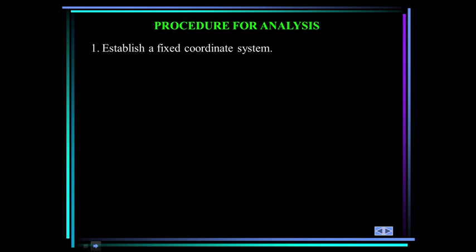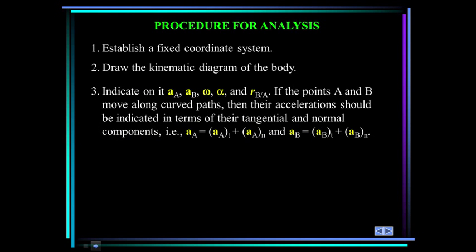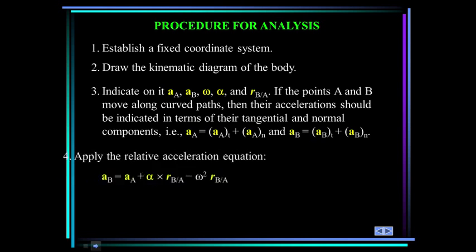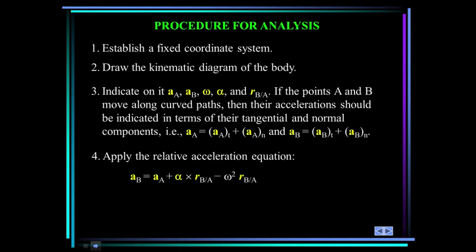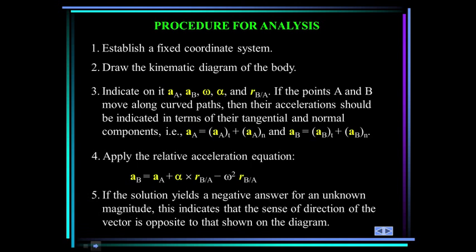Let's establish a procedure for analysis. First, establish a fixed coordinate system. Draw the kinetic diagram of the body, and indicate on it the acceleration of A, acceleration of B, omega, alpha, and R of B with respect to A — those are all vectors. If the points A and B move along curved paths, their accelerations should be indicated in terms of their tangential and normal components. Apply the relative acceleration equation. If the solution yields a negative answer for an unknown magnitude, this indicates that the sense of the direction of the vector is opposite to that assumed.